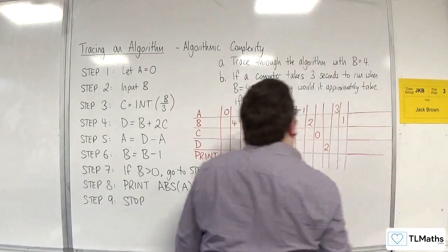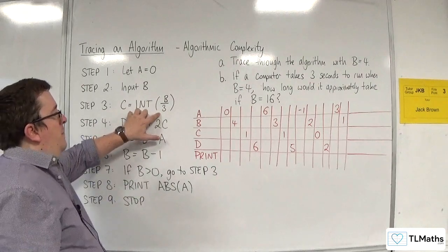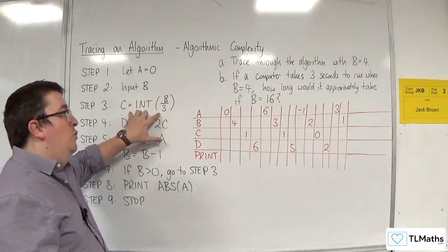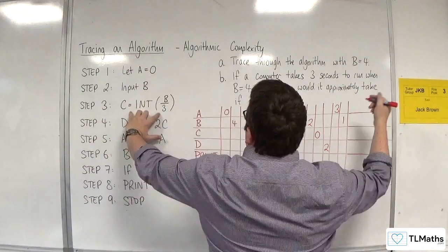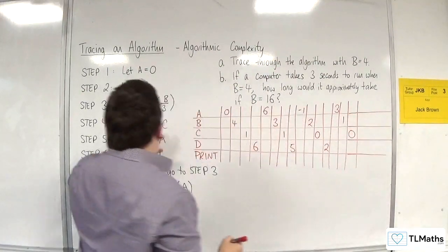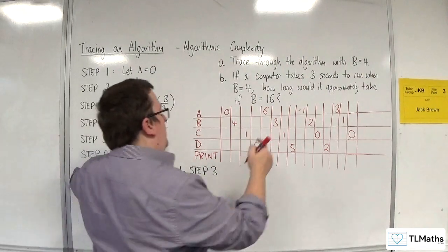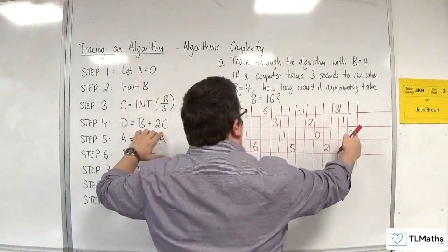Hopefully, I'm going to have enough space. Then I go back up to step 3. So, integer part of 1 over 3, integer part of 0.3 recurring, it's just 0. So, that's c. D is equal to b plus 2c. So, 1 plus 2 lots of 0, so 1.